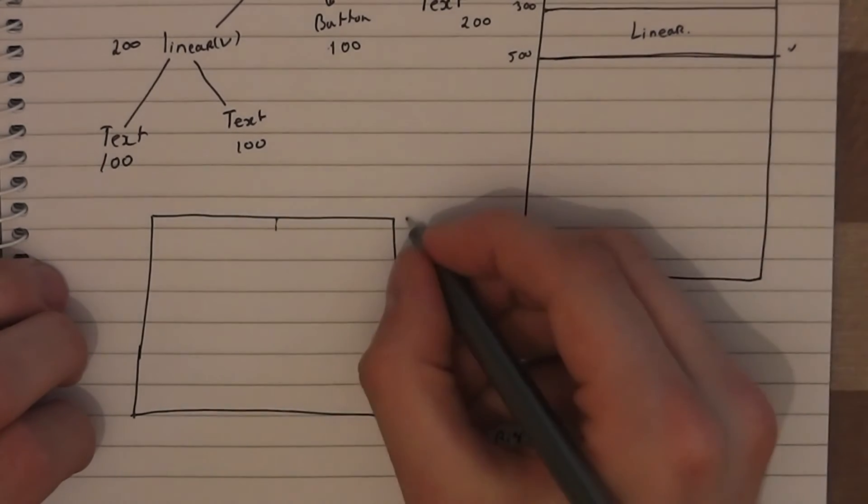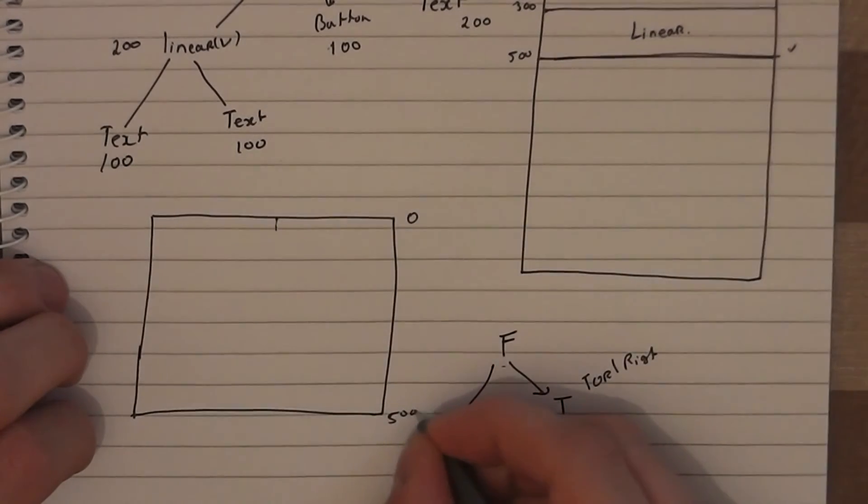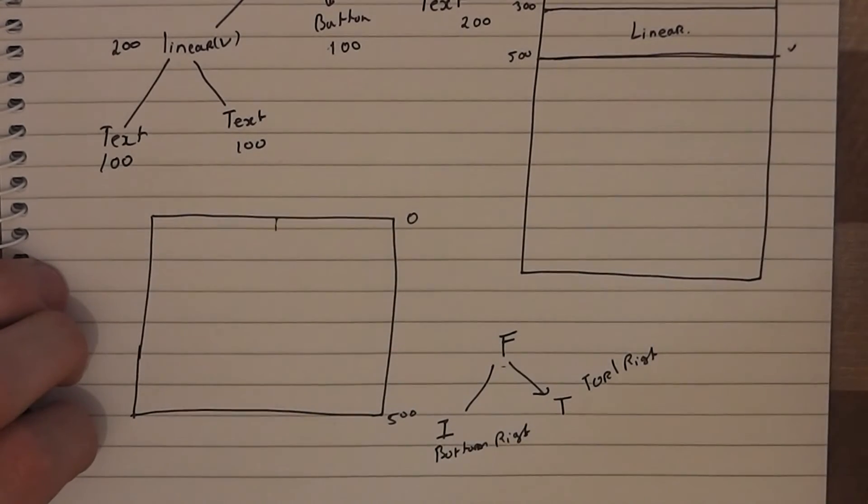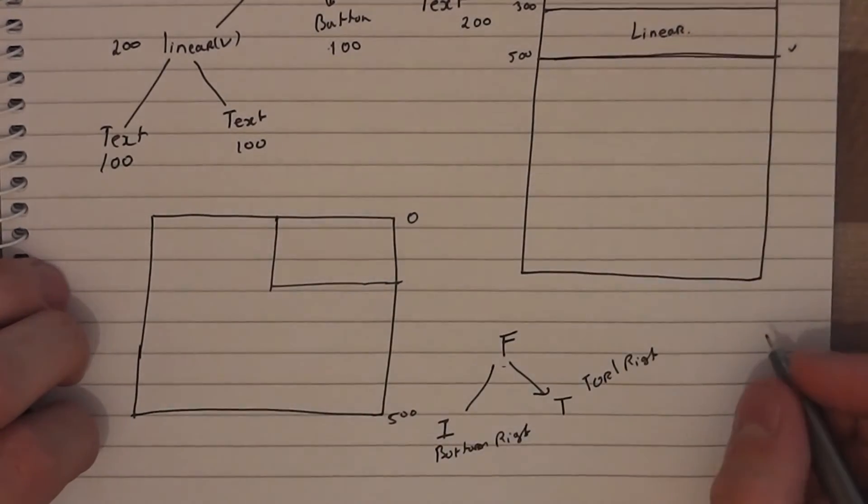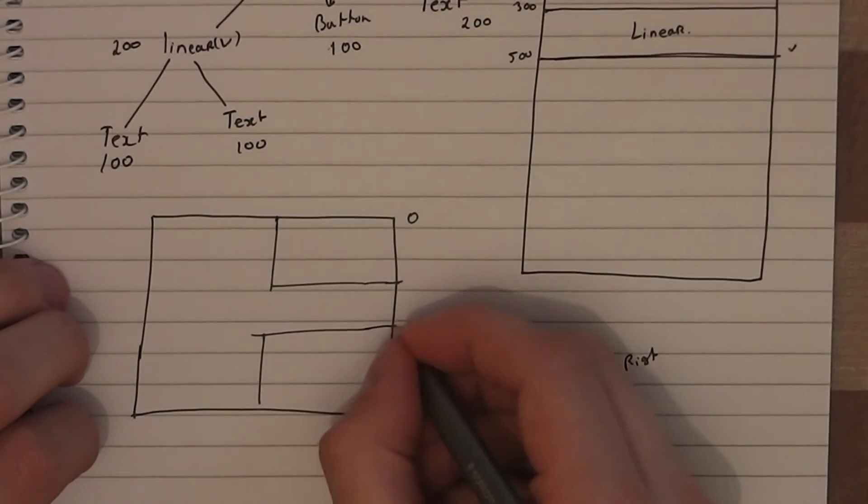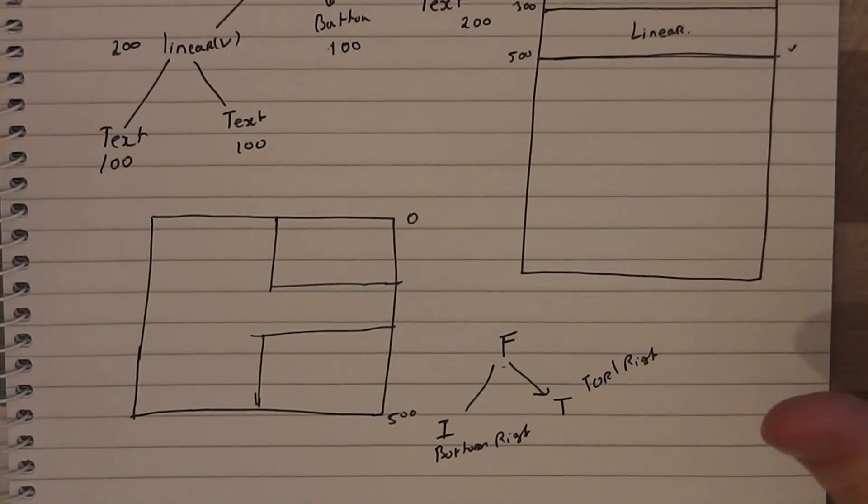So the frame layout now knows how big I am. Let's say 0 to 500 again. And it goes, okay, position the text view. So it looks at the text view and it says okay, you're going to go on here. And then it's going to say okay, image view, you're going to go in there. And it basically, the layout pass figures out what position on the screen it goes.